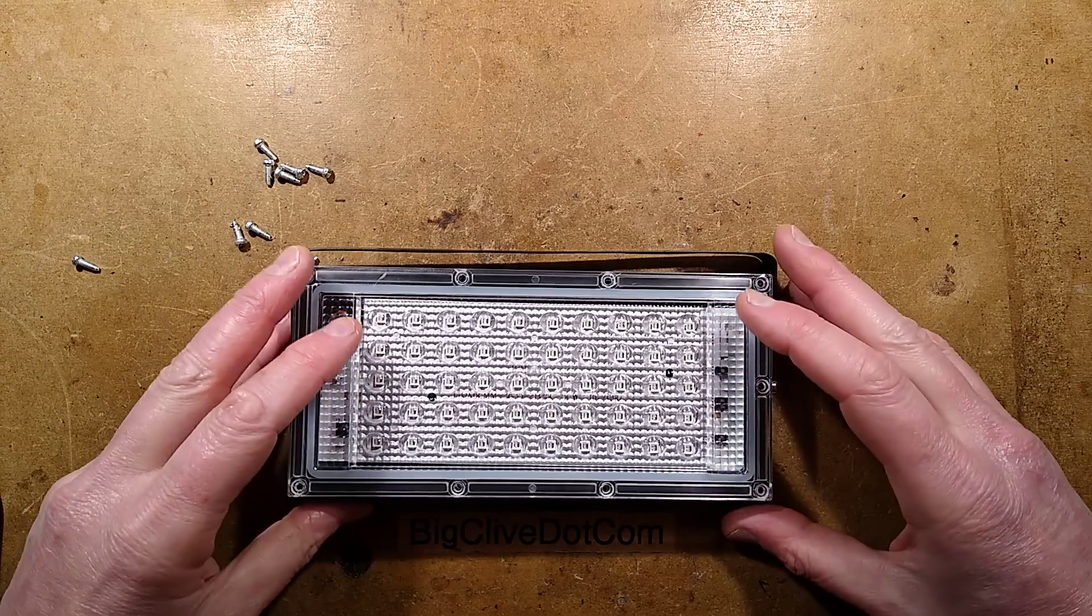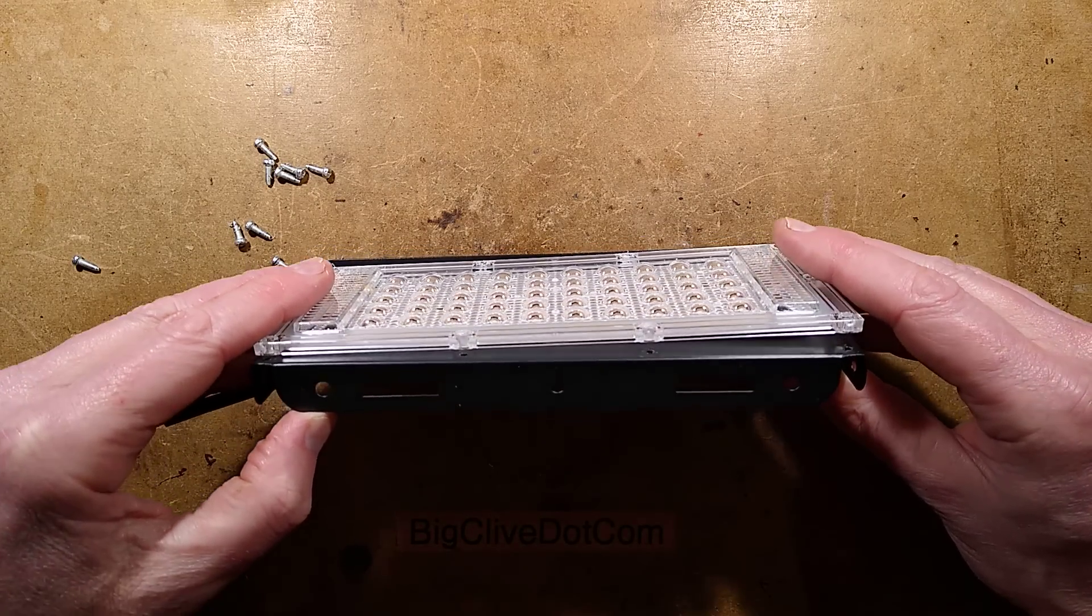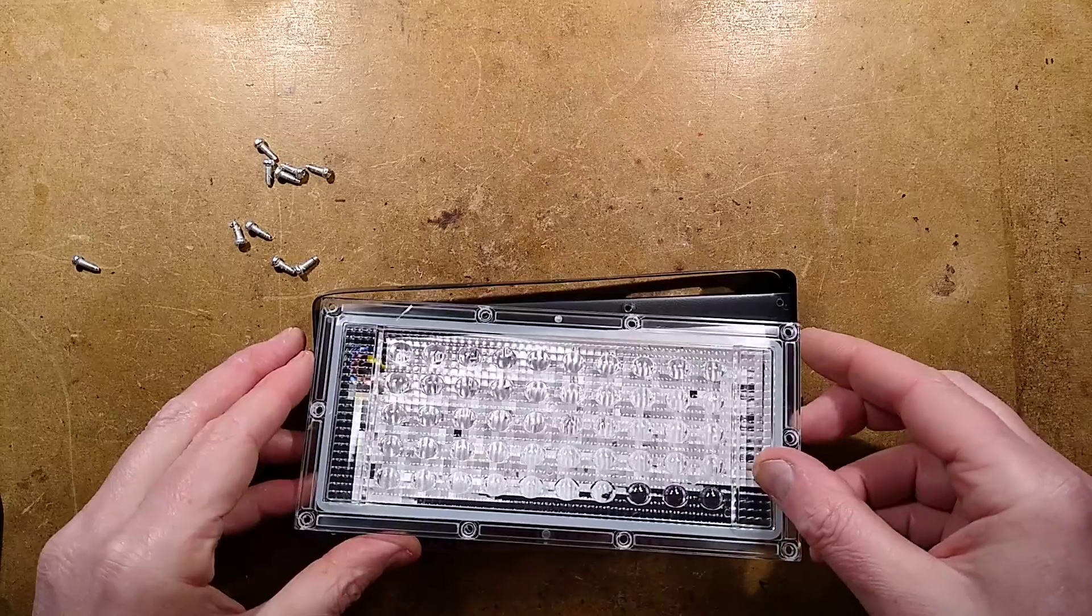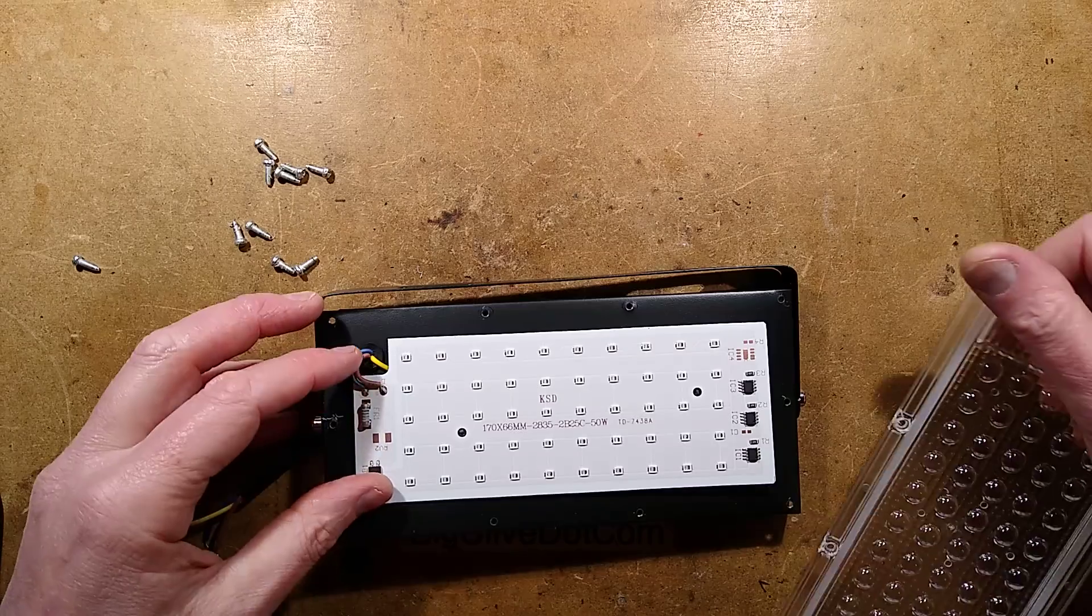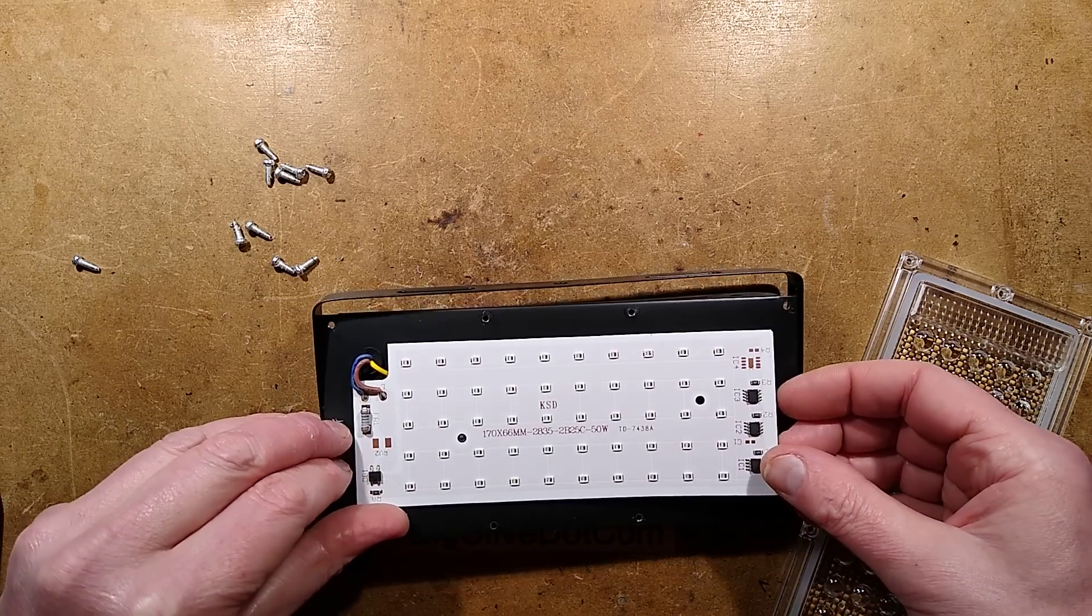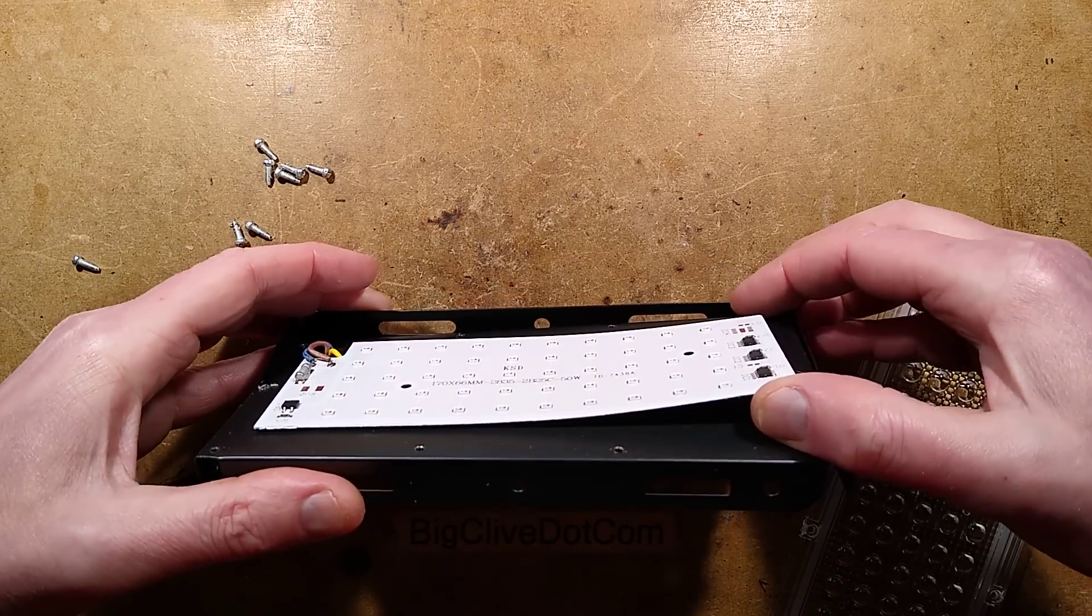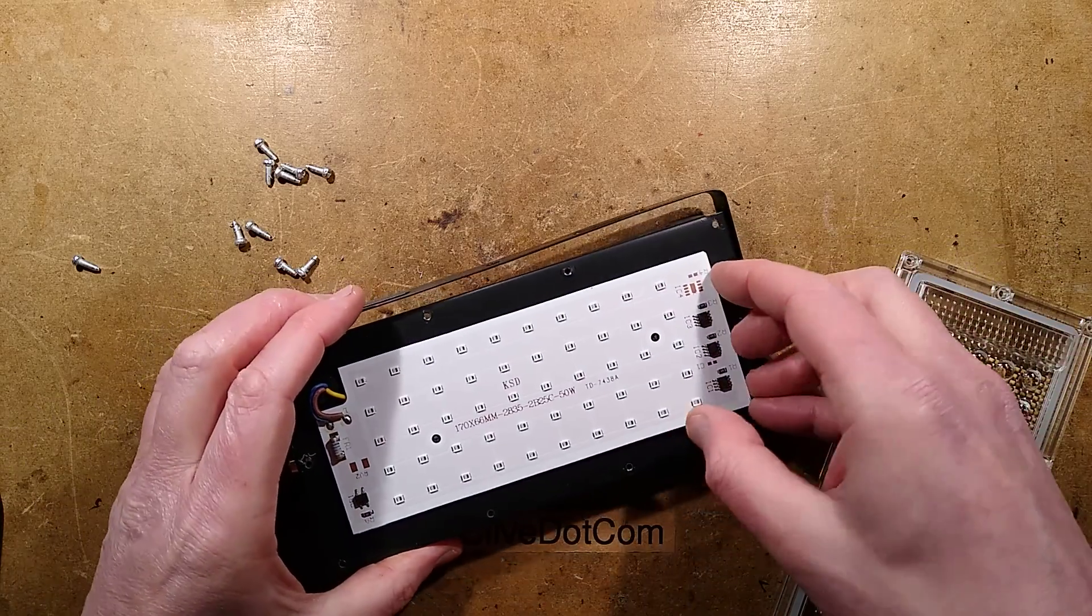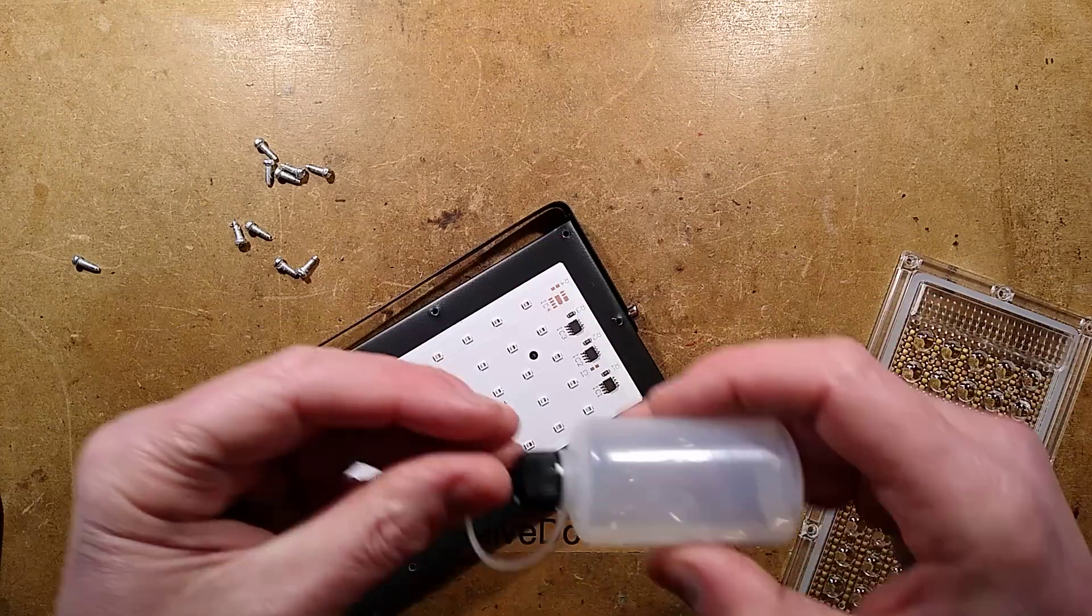The screws are out. I'm noticing that this is slightly curved. The whole circuit board is kind of blowing up as well. Is there any heat sink compound in the back? Oh, there is. It's sticky. It's glued. What the heck? Hold on.